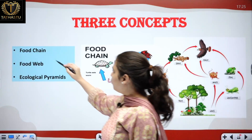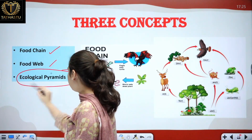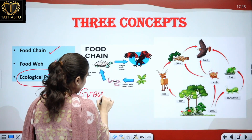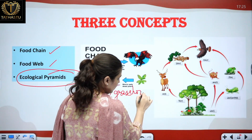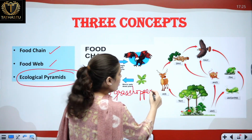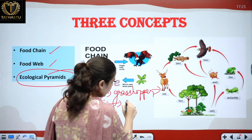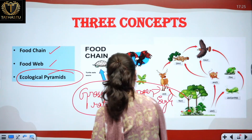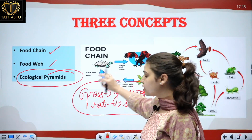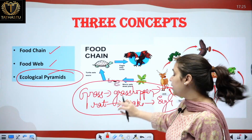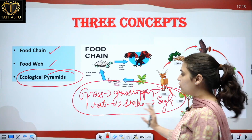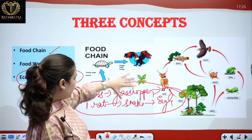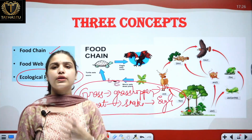Energy flow involves three concepts: food chain, food web, and ecological pyramids. What is a food chain? For example: grass is consumed by a grasshopper; the grasshopper is food for a rat; the rat is food for a snake; and the snake is food for an eagle. This is our food chain — starting from grass, everyone is interconnected and dependent on each other for food.